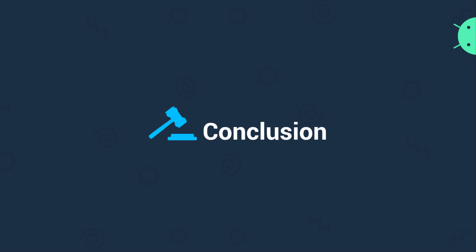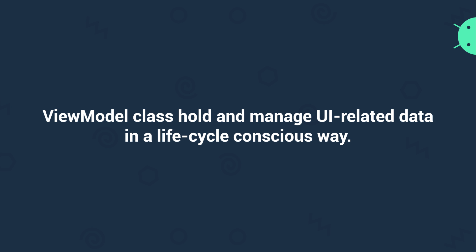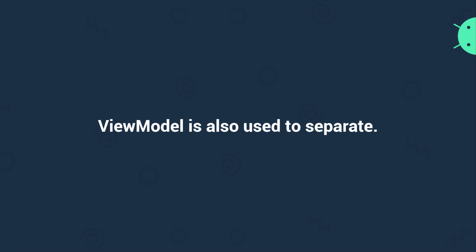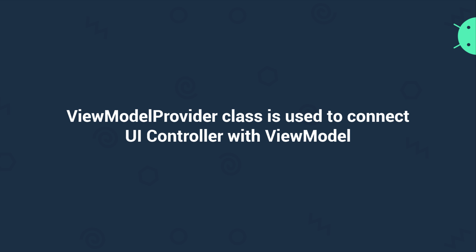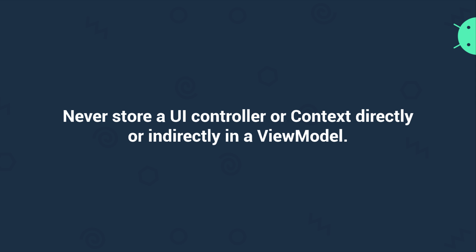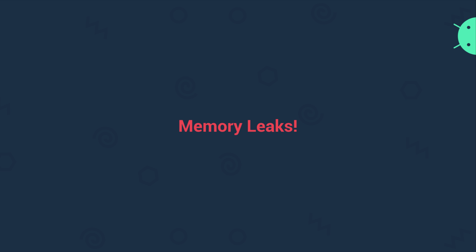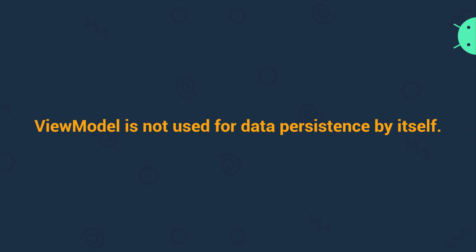To summarize: the ViewModel class is designed to hold and manage UI-related data in a lifecycle-conscious way, allowing data to survive changes such as screen rotations. Your ViewModel will be aware of your UI controller's lifecycle. ViewModel is also used to separate application data and calculations from UI implementation. The ViewModelProvider class is used to connect a UI controller with a ViewModel by passing a context as argument. You should never store a UI controller or context directly or indirectly in a ViewModel — this includes storing a view — as it defeats the purpose of separation and can lead to memory leaks. Finally, the ViewModel is not used for data persistence by itself; it's often used in combination with saved instance state and a local database.